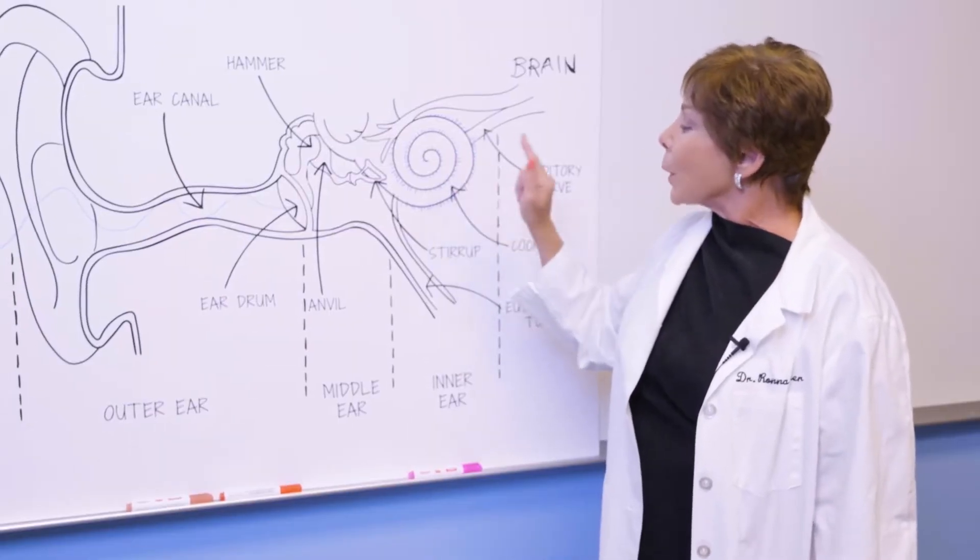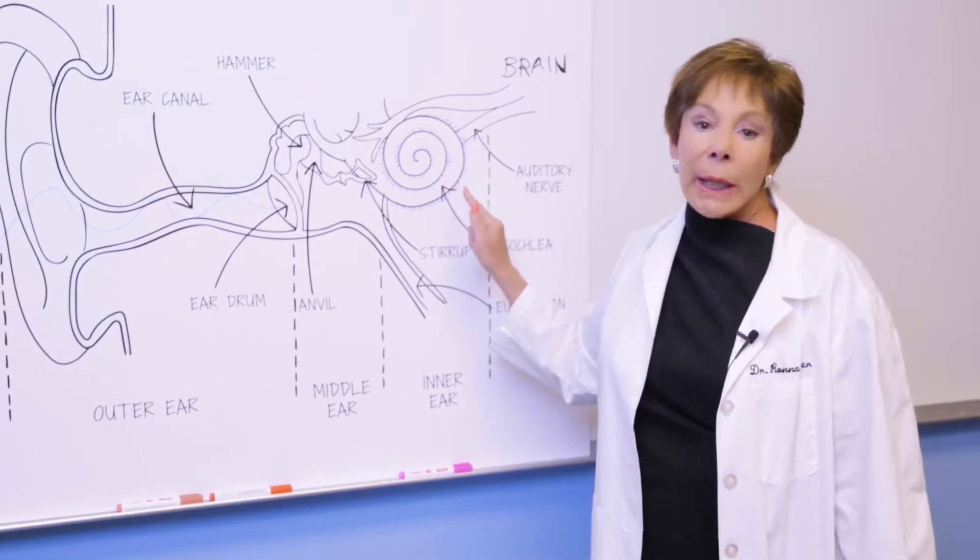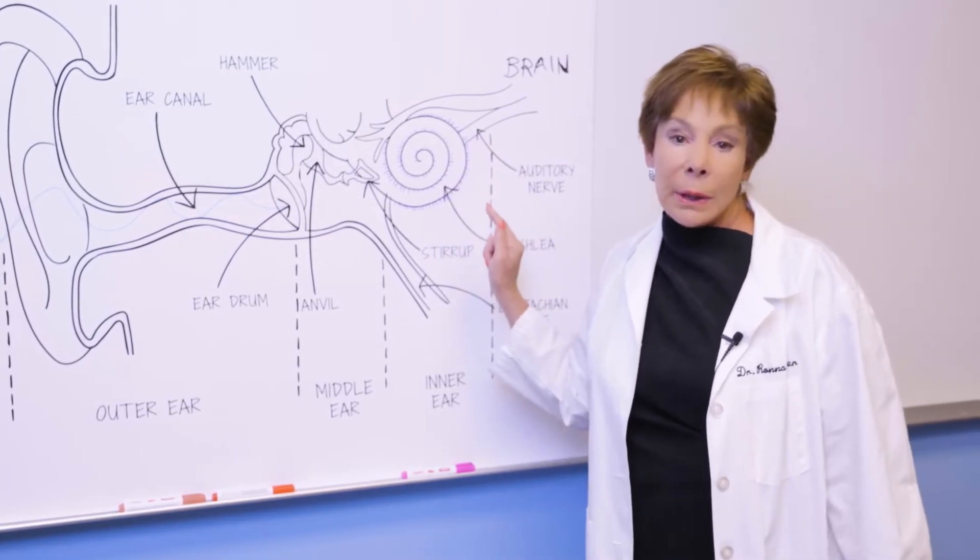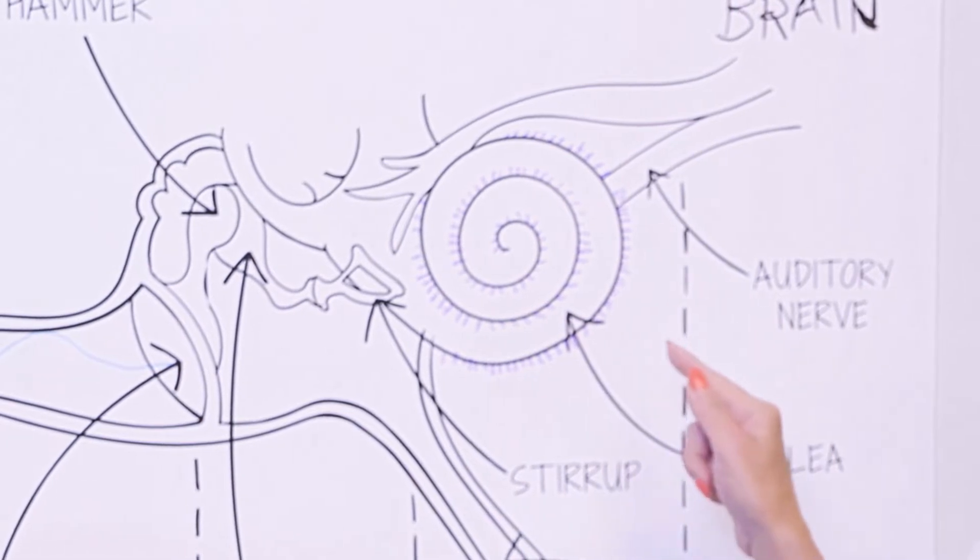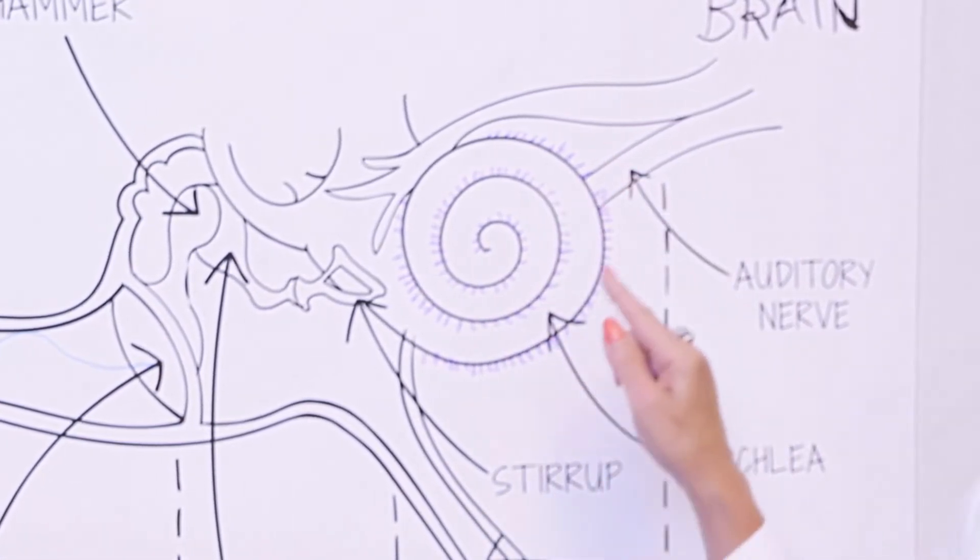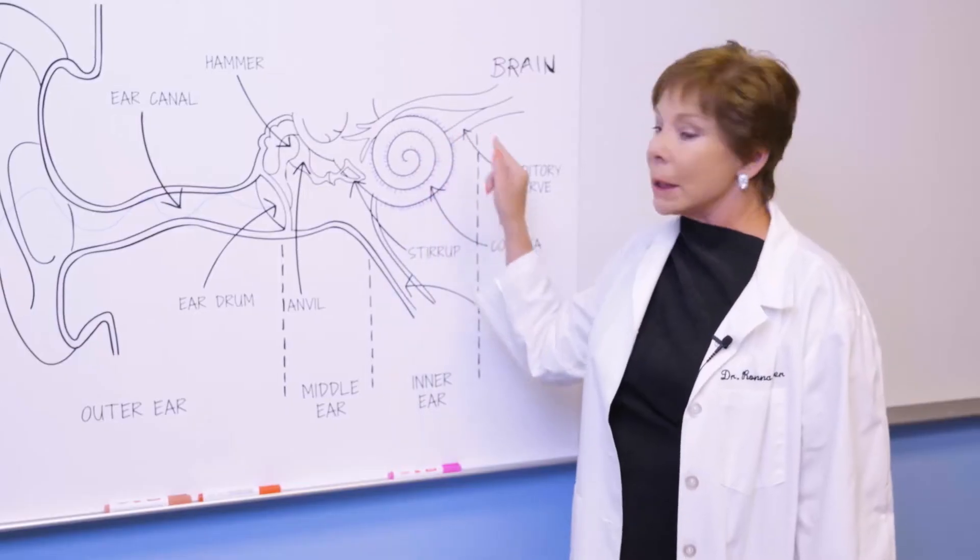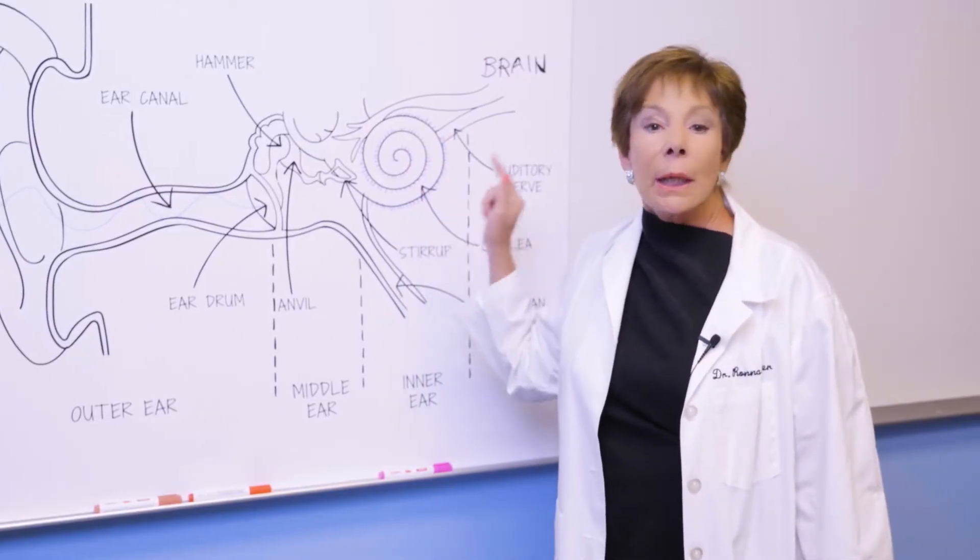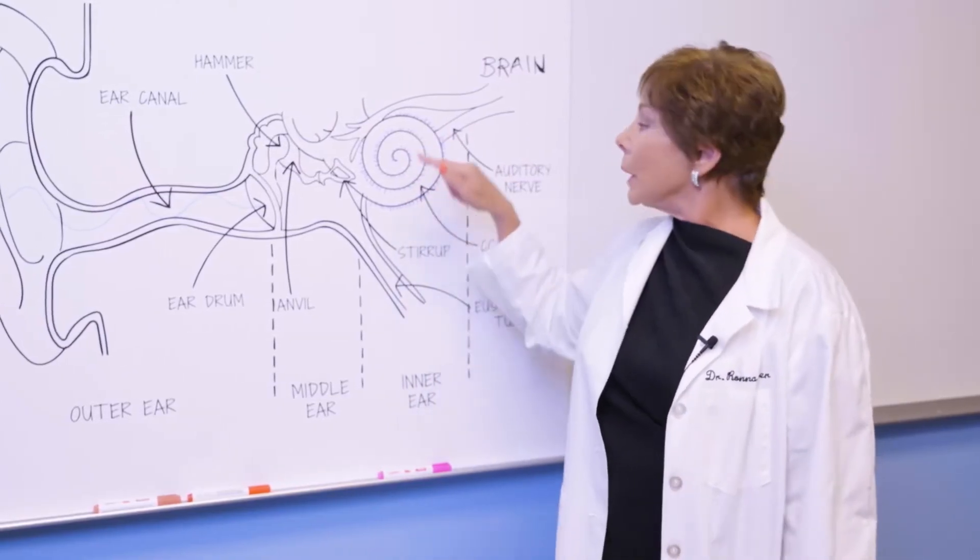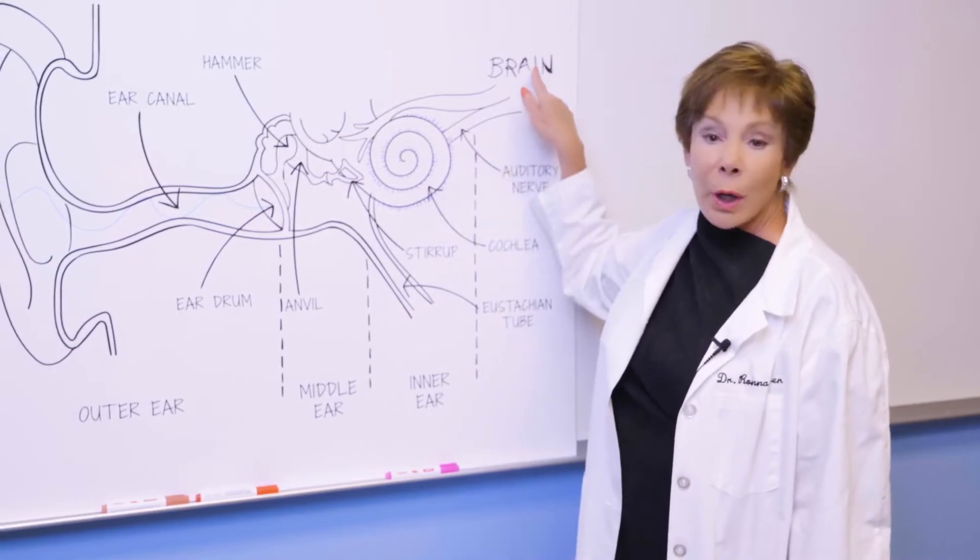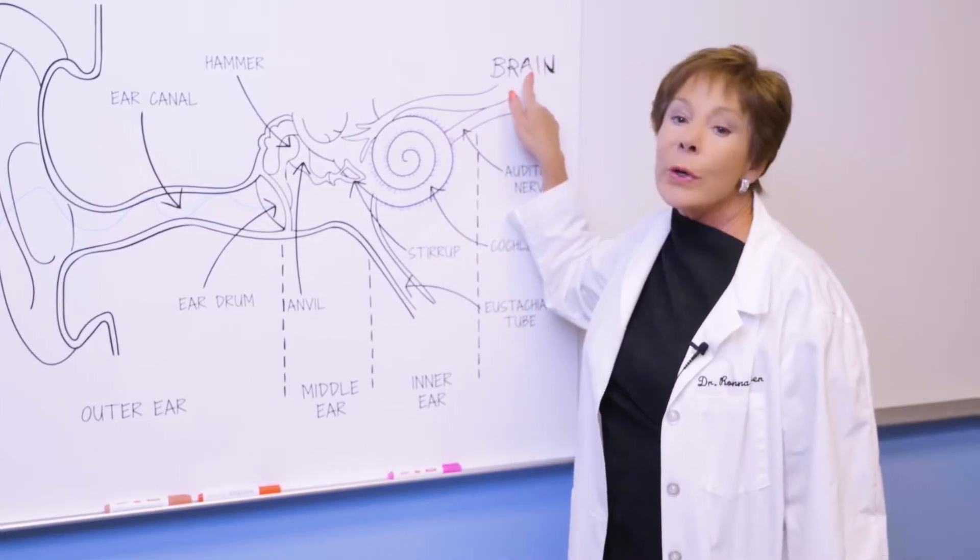The inner ear is your actual organ of hearing. It's called the cochlea, and it looks like a snail. It has millions of tiny hair cells all around it. These tiny hair cells vibrate in response to sound, and send the sound up the auditory nerve to your brain.